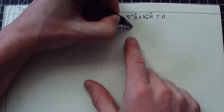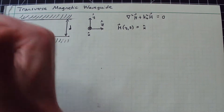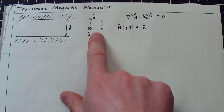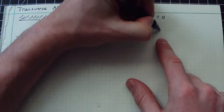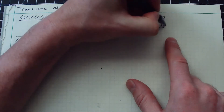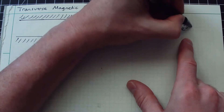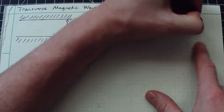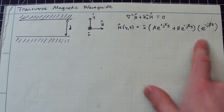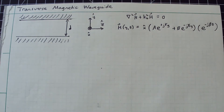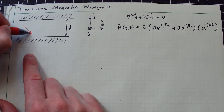With the benefit of hindsight, I'm going to assume the following solution. My H field is a function of y and z, polarized along the x-hat direction — that's where we get the idea of transverse magnetic, because it is transverse to the direction of propagation. I'll write it as: A e^(+jγy) + B e^(−jγy), times e^(−jβz).